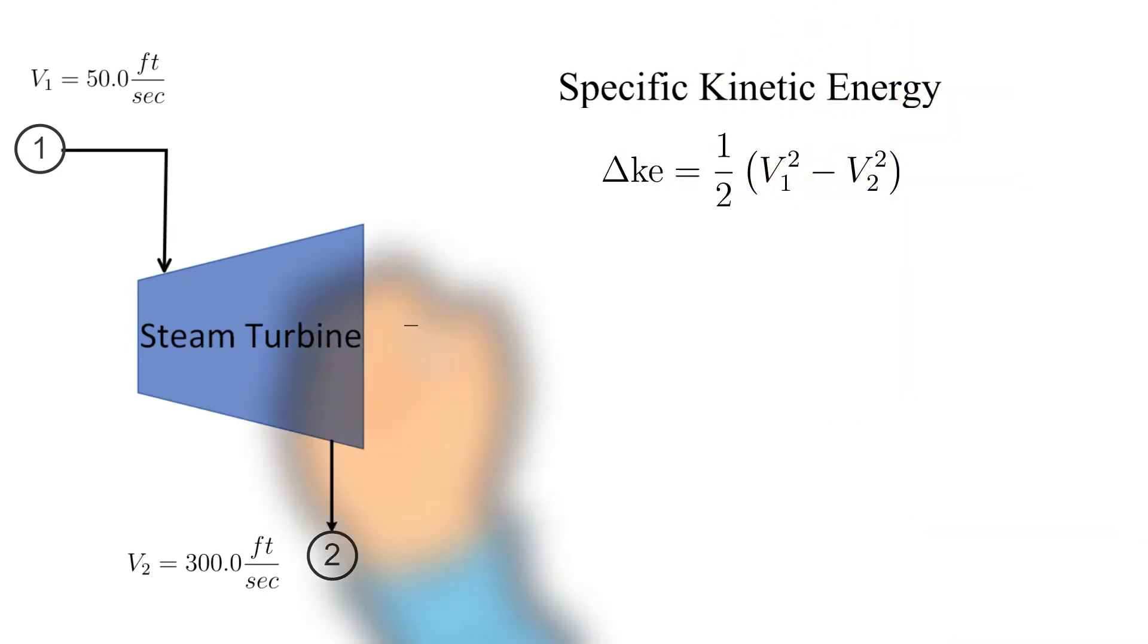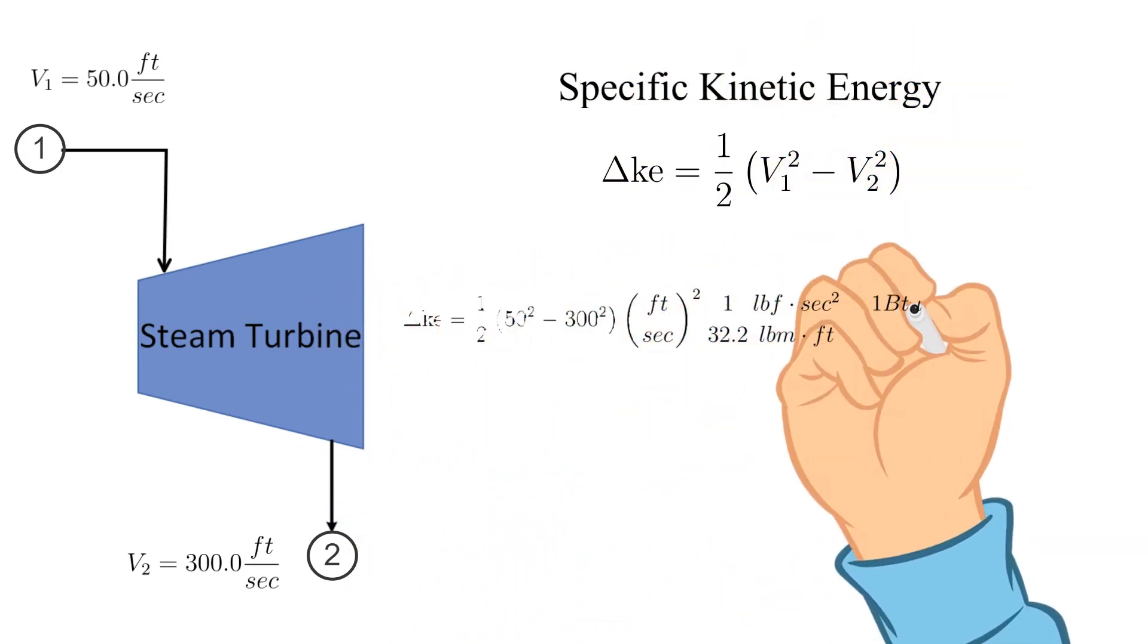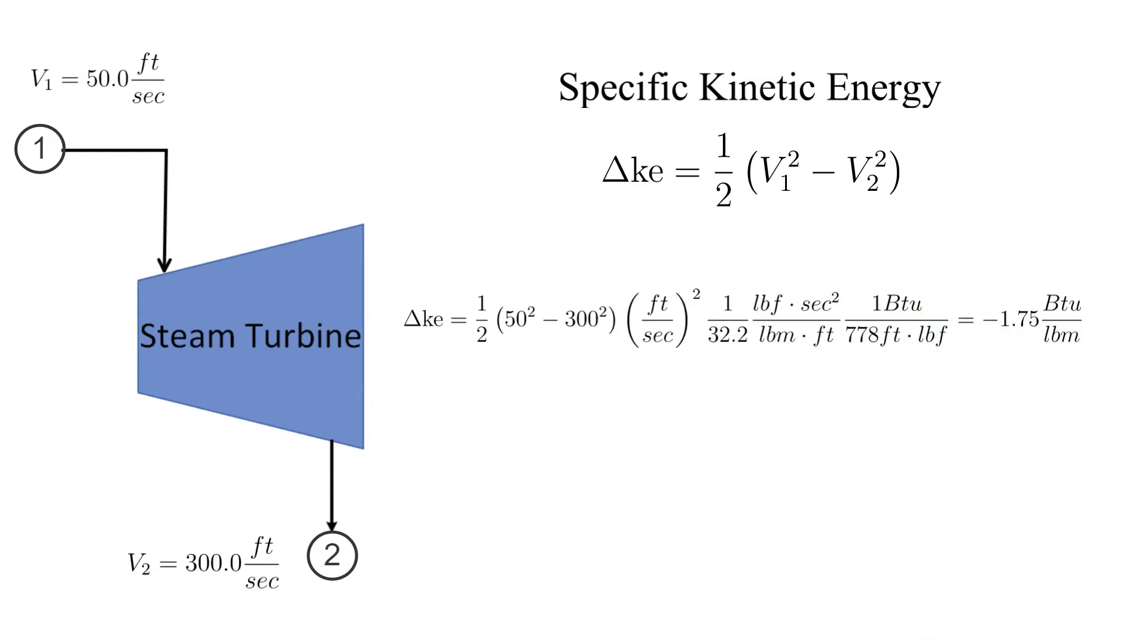Next is specific kinetic energy. Calculating the specific kinetic energy once again uses 1 over g_c and the conversion factor from pounds force feet to BTU. Also once again the magnitude of the end result is rather small when compared to the change in specific enthalpy.